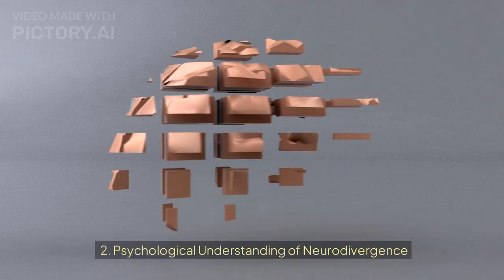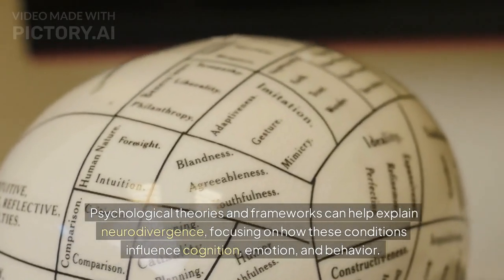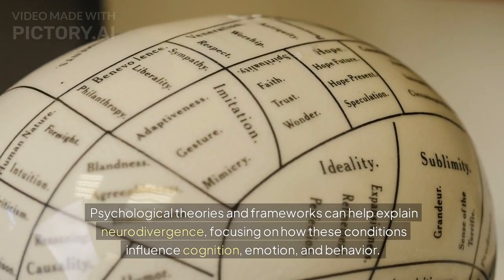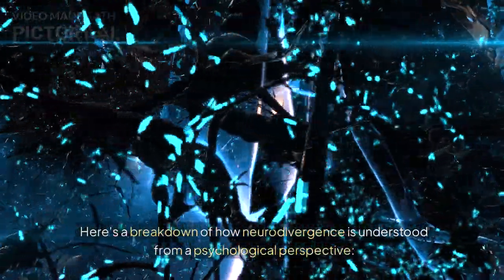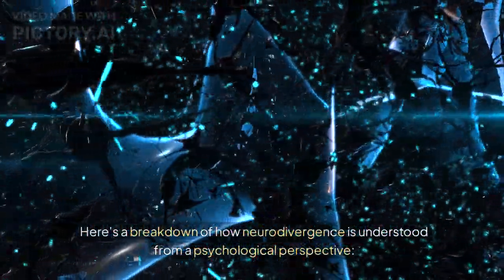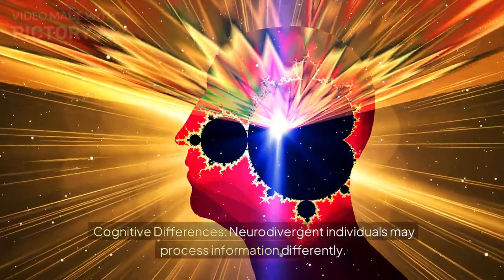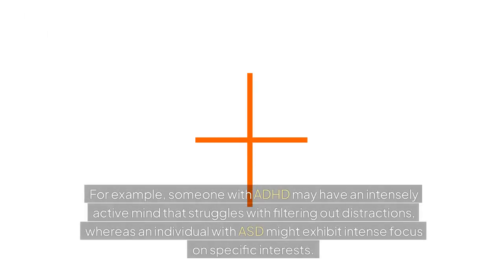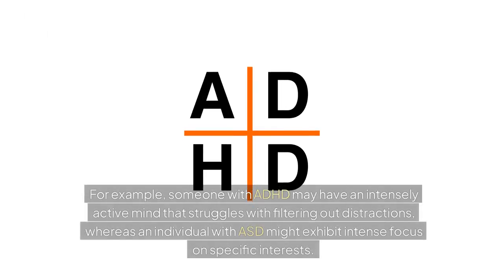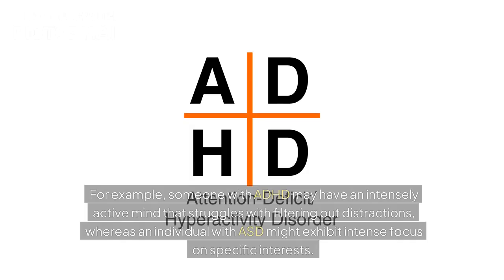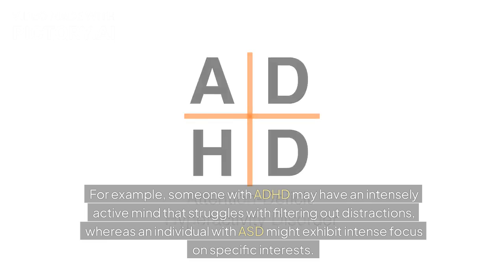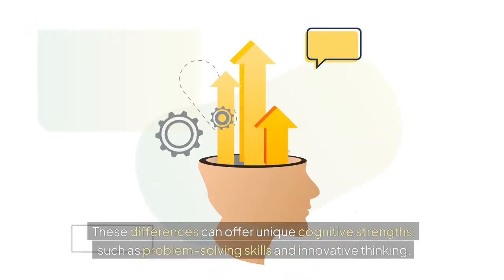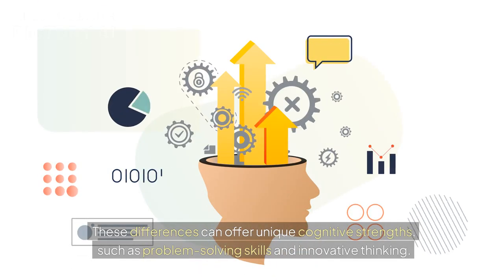2. Psychological Understanding of Neurodivergence. Psychological theories and frameworks can help explain neurodivergence, focusing on how these conditions influence cognition, emotion, and behavior. Regarding cognitive differences, neurodivergent individuals may process information differently. For example, someone with ADHD may have an intensely active mind that struggles with filtering out distractions, whereas an individual with ASD might exhibit intense focus on specific interests. These differences can offer unique cognitive strengths, such as problem-solving skills and innovative thinking.